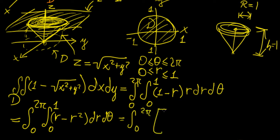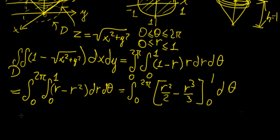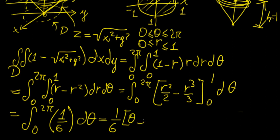Integrating with respect to r, this becomes r squared over 2 minus r cubed over 3, evaluated from 0 to 1, dθ. This gives us the integral from 0 to 2π of 1/6 dθ, which equals 1/6 times θ from 0 to 2π, giving us π/3.